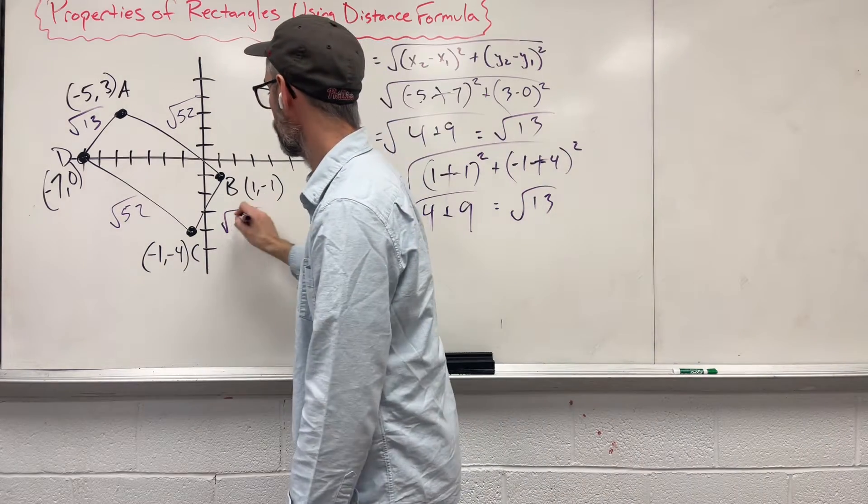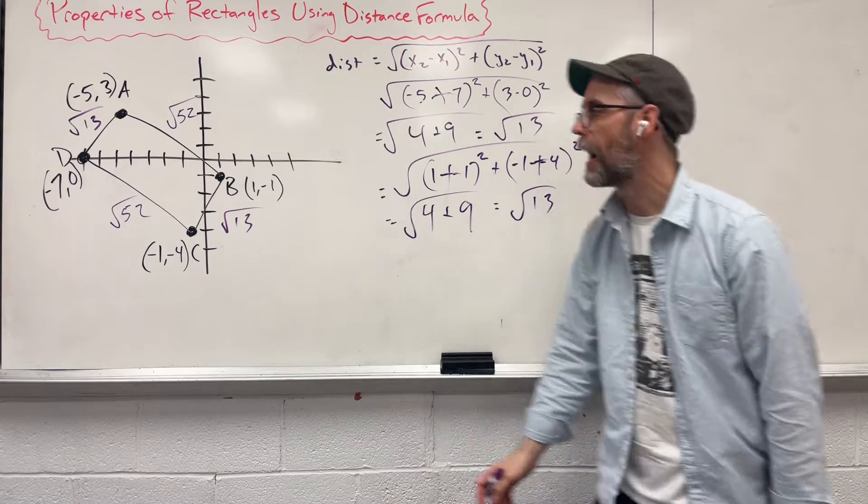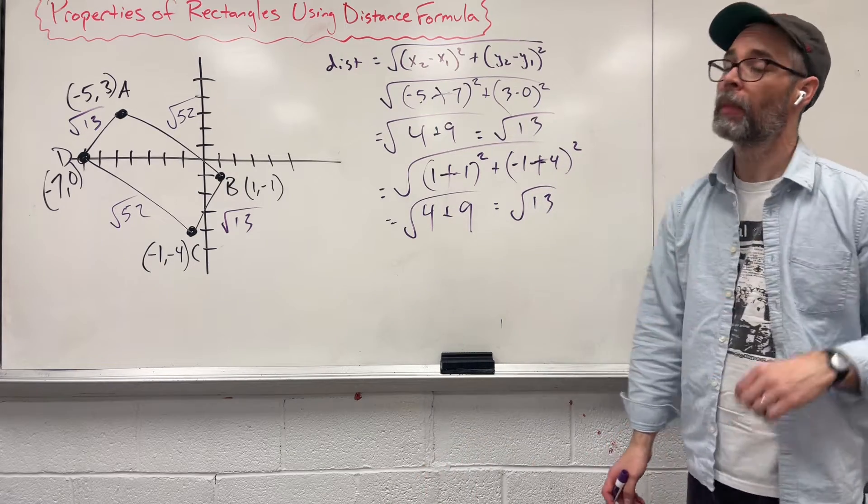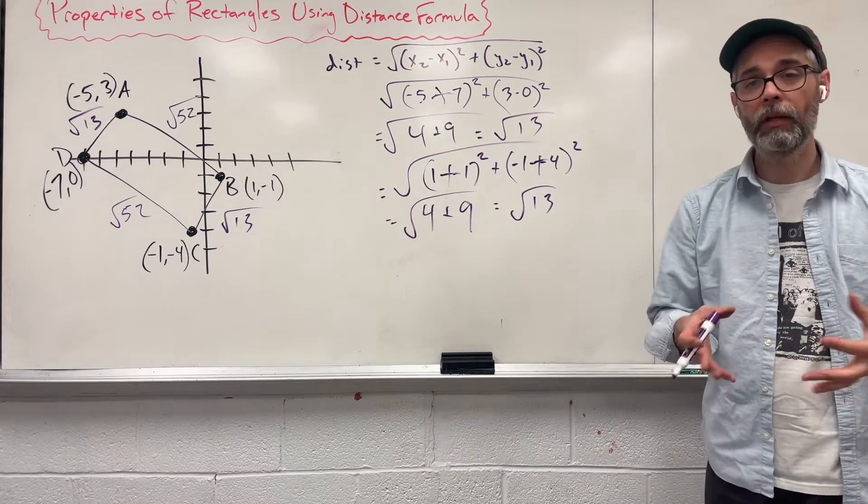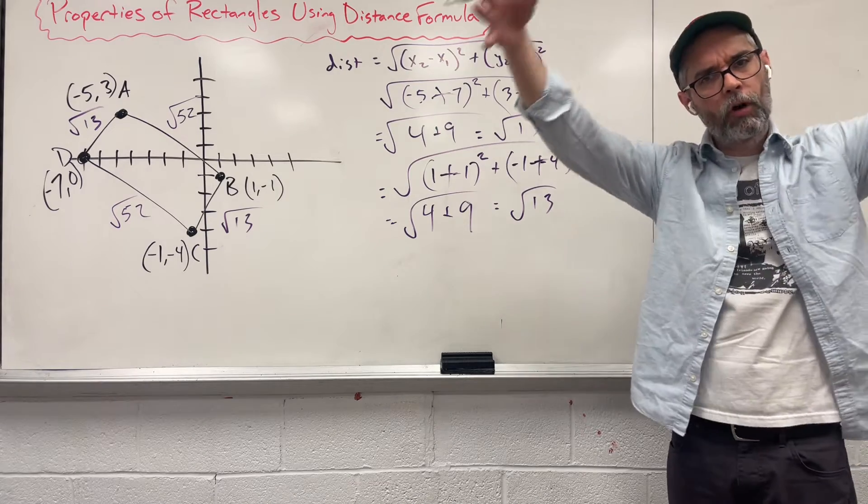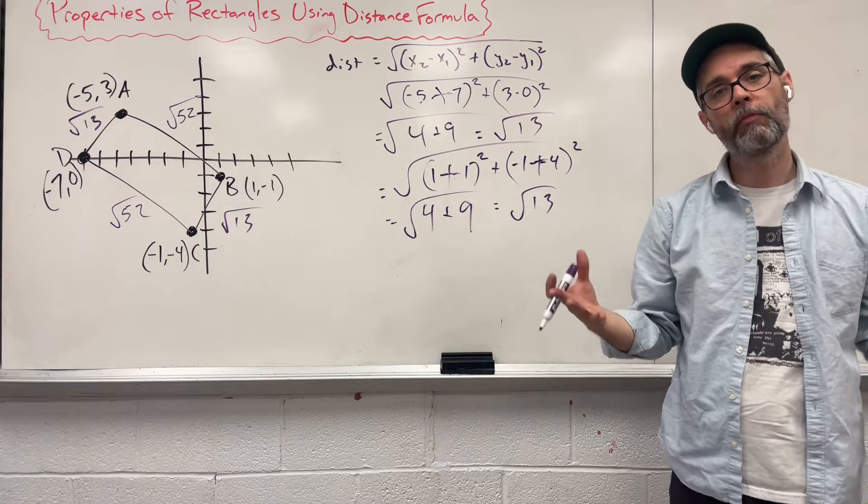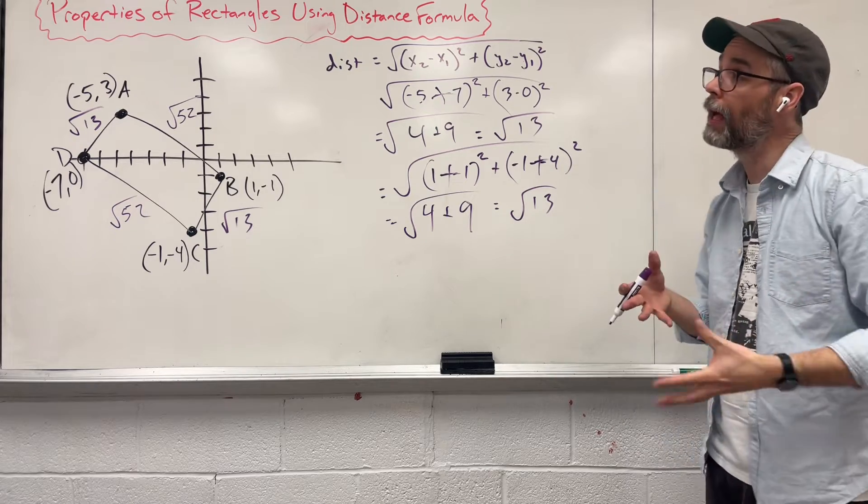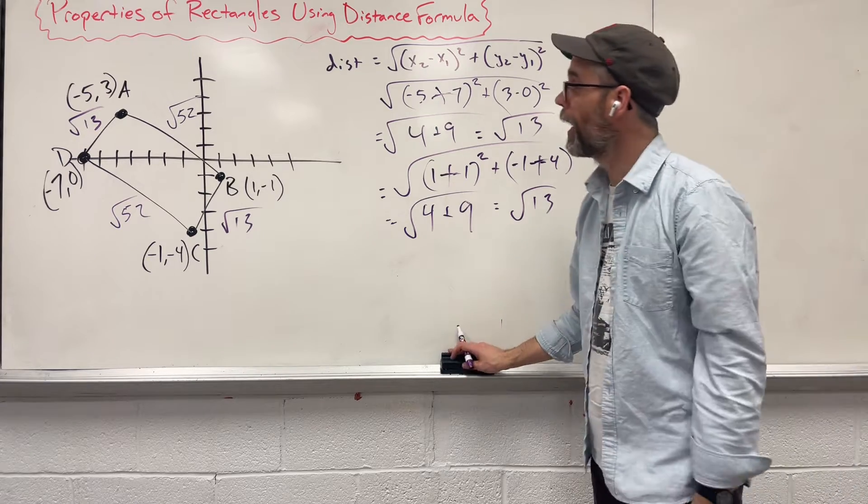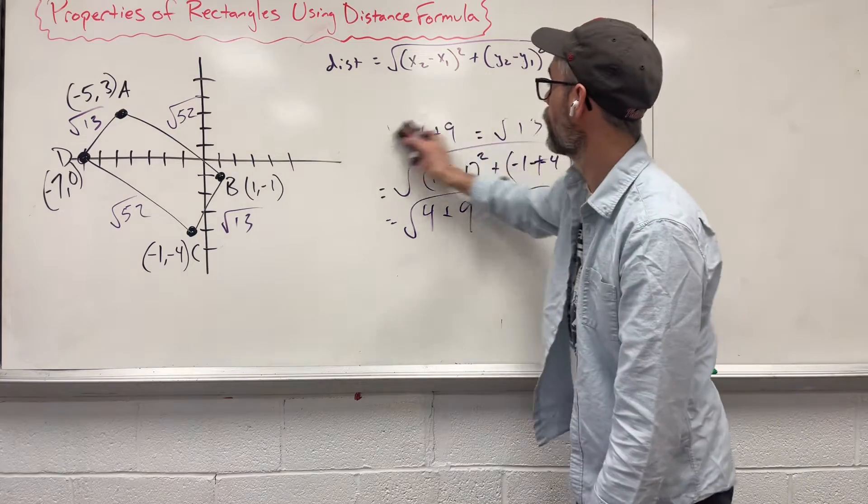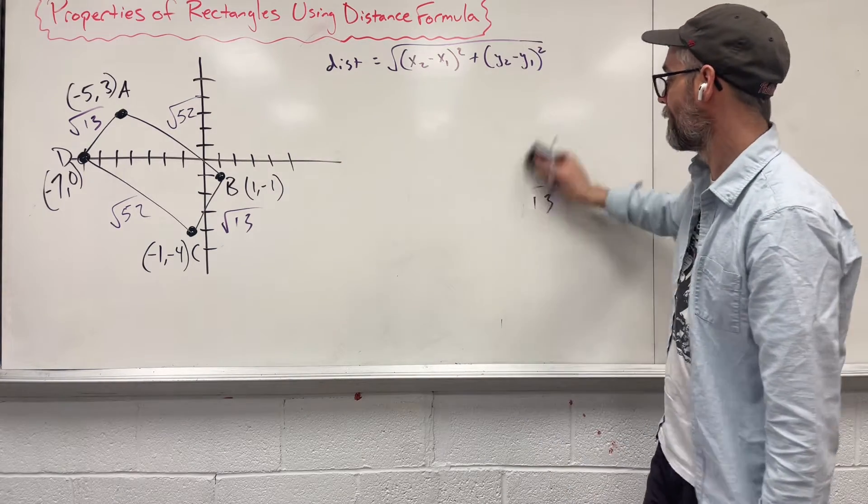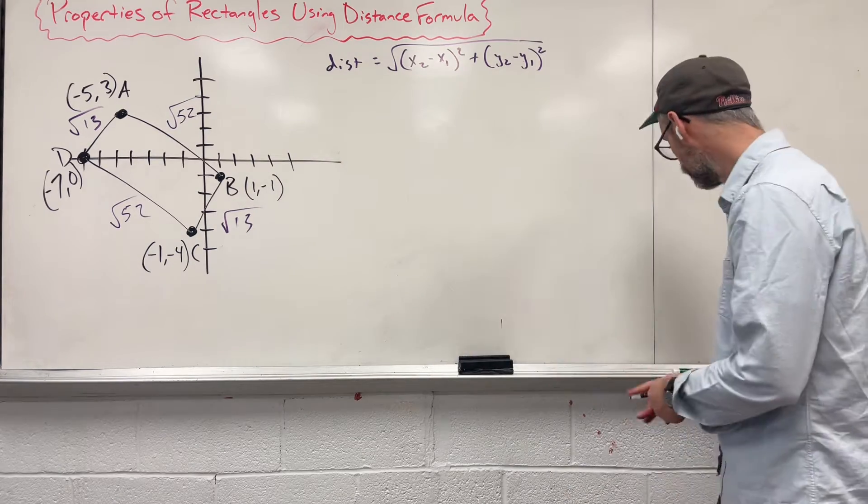So I would love to just stop right here. But we cannot. We just found that we have a parallelogram. A parallelogram is kind of like the overarching term that we've got going on here. A rectangle is a more specified version of that. So in order to figure that one out, we have to do the distance formula two more times. And this time we have to do it to the diagonals.